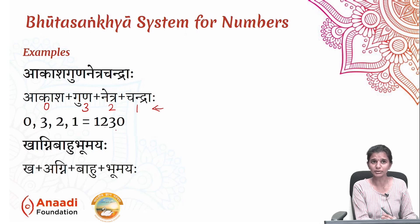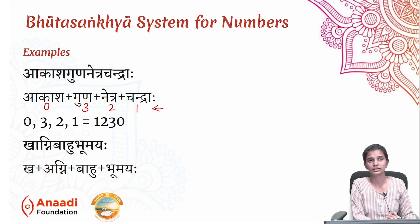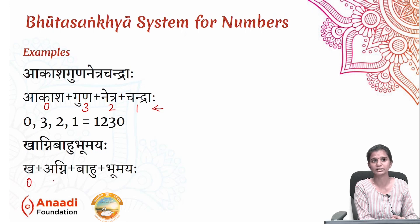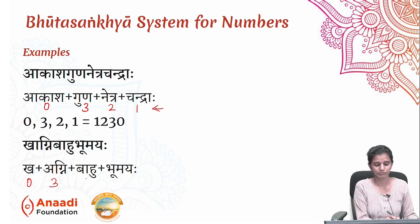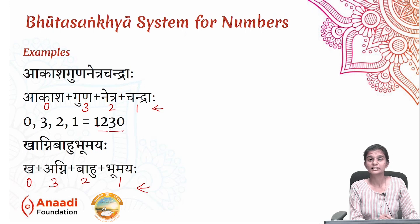The same number can be represented by a different word. Let us take Khagni-Bahu-Bhumaya, which breaks into Kh + Agni + Bahu + Bhumaya. Kh means Akasha — value is zero. Agni — there are three Agnis — gives three. Bahu means hands — two hands — gives two. Bhumi means earth — one. When you reverse this, you again get one, two, three, zero. The same number is represented by two different words.